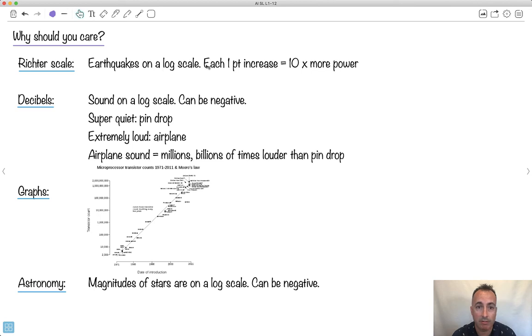Earthquakes are on a logarithmic scale. That's because each one-point increase on this Richter scale, as we call it, it's actually ten times more. So that's actually logarithmic, which means if you have something that's a magnitude five...